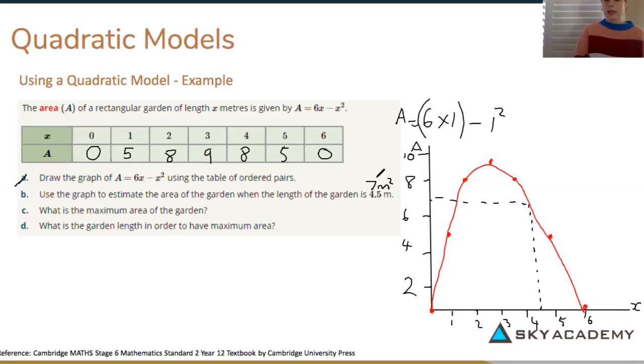But we can check that answer if we wanted to and sub it in into our formula. So although it says use the graph to estimate we can check that our graph is correct by subbing x for 4.5, so 6 times 4.5 minus 4.5 squared. If you put that in your calculator, you should get the answer 6.75 meters squared. So that's roughly 7 meters squared. We're just going to leave our answer of 7 meters and we can know that our graph is pretty accurate because we got a close enough answer.